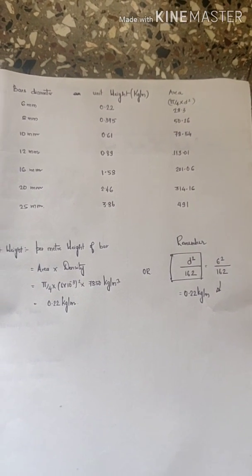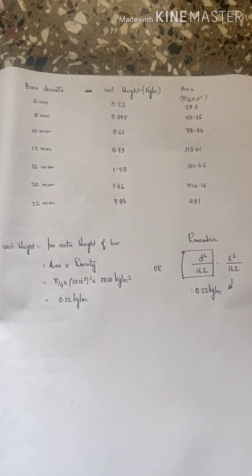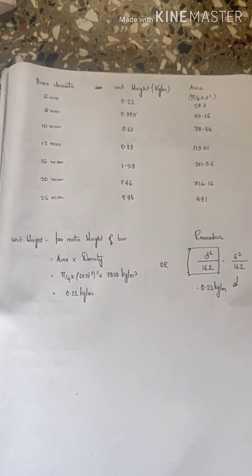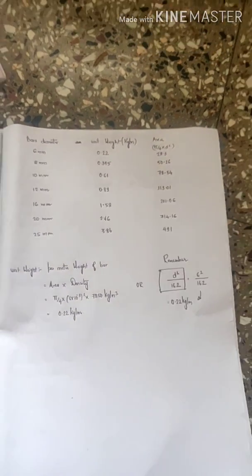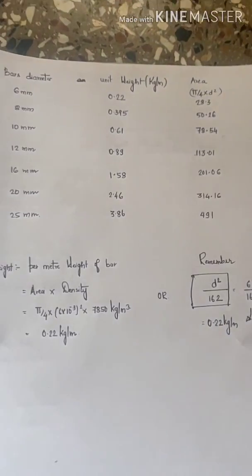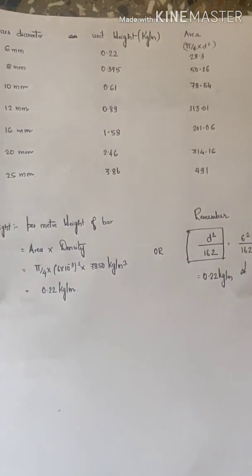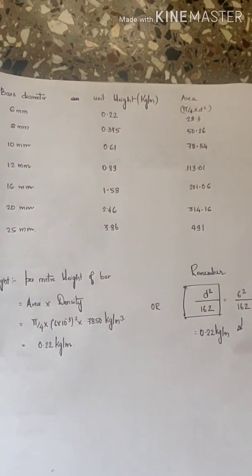We'll calculate the steel quantity required for individual RCC elements such as slab, beam, columns, and footings. To calculate what is the amount of steel required in terms of kg, quintal, or tons, we should know what is the unit weight of the standard bar diameters.